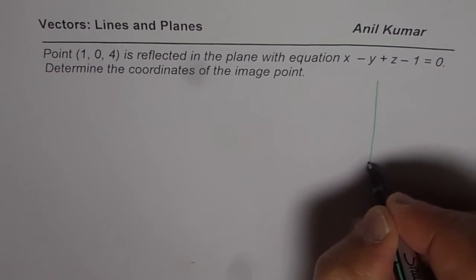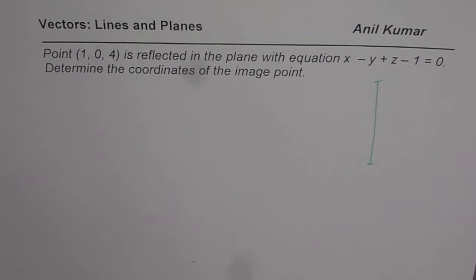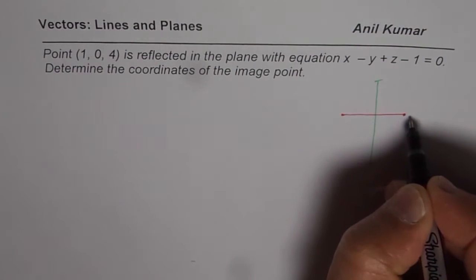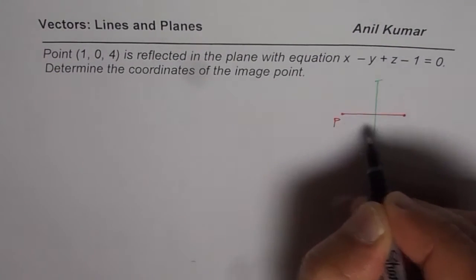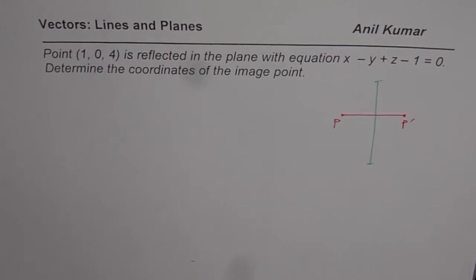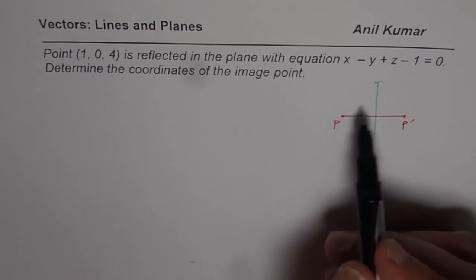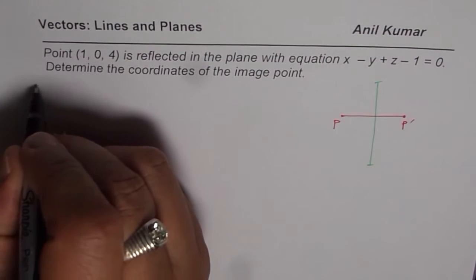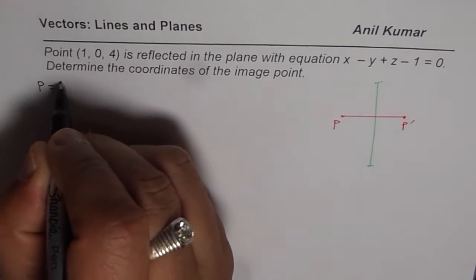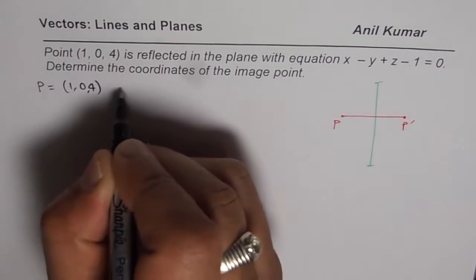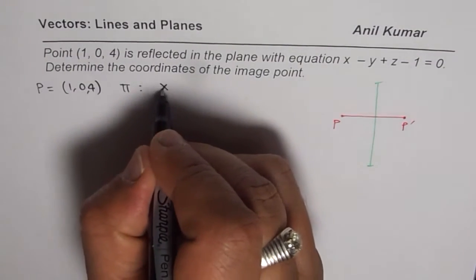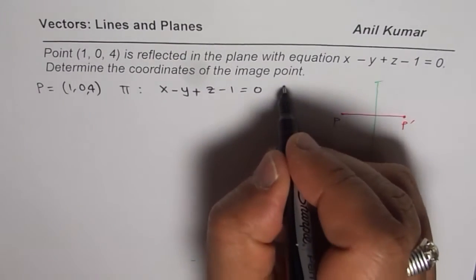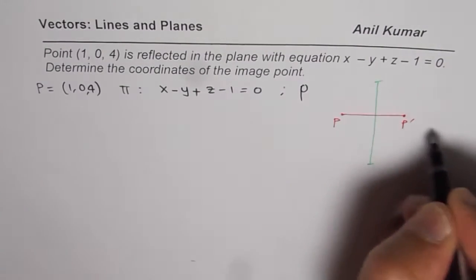The situation is kind of like this — let us say this is the plane. There is a point outside the plane which is reflected, and that's the image. Let us imagine this to be P and P-dash as the image of this point. We are given the equation of the plane and the location of the point. So we know that the point is (1, 0, 4) and the plane is x minus y plus z minus 1 equals 0. We need to find the coordinates of the reflection of this point.